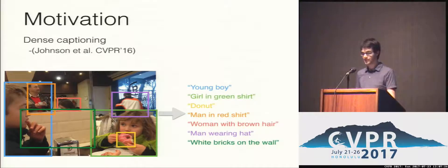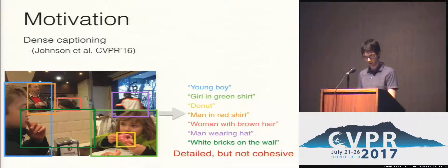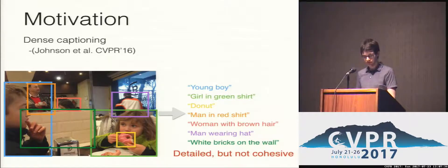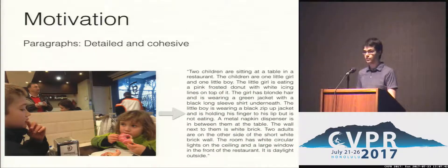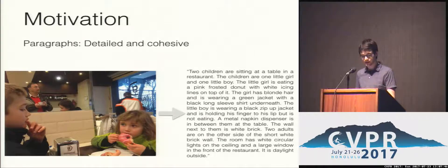One way forward is the task of dense captioning introduced last year, which combines the ideas of image captioning and detection. While this produces outputs with much more detail, these descriptions do not form a coherent whole. In this work, we introduce the task of captioning images with rich, descriptive paragraphs, which provide an enormous amount of detail, far greater than is present with a single sentence.